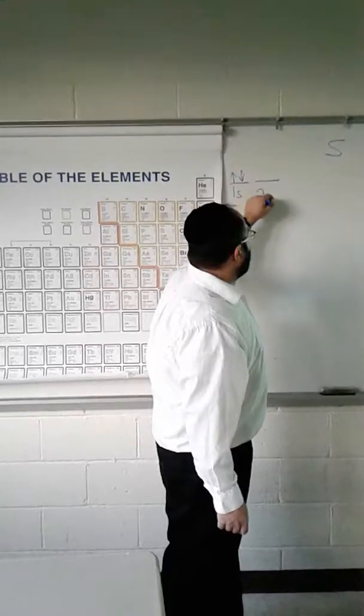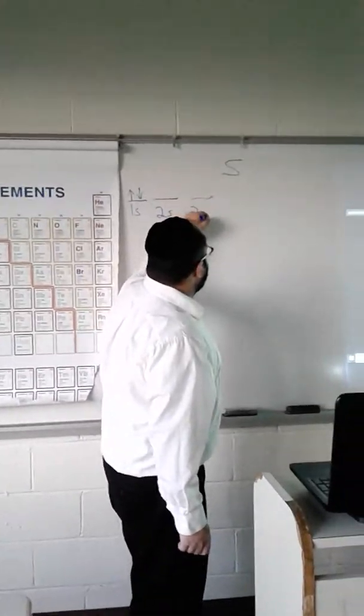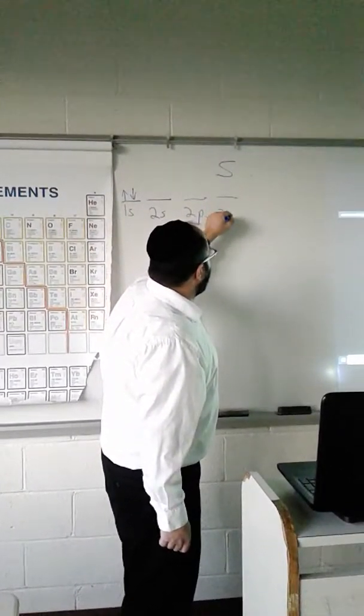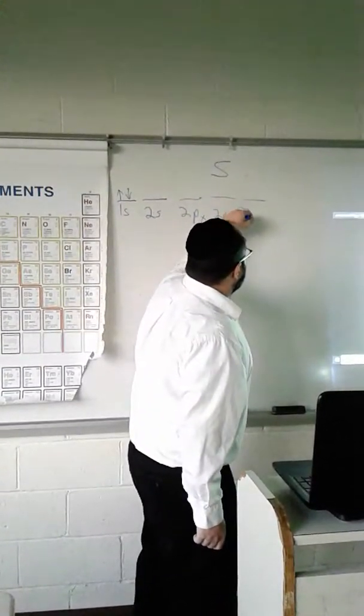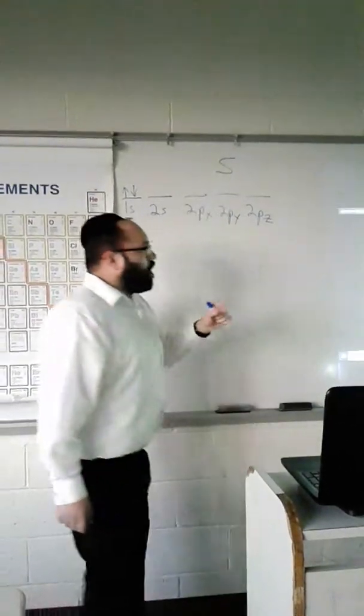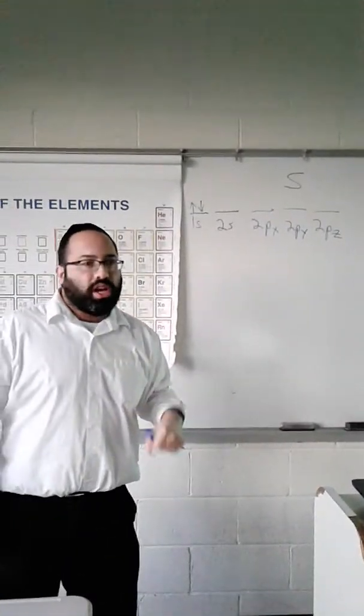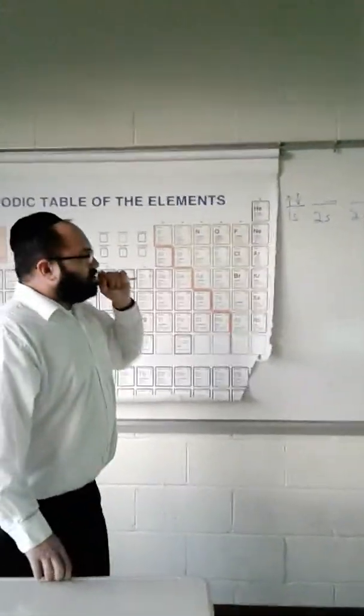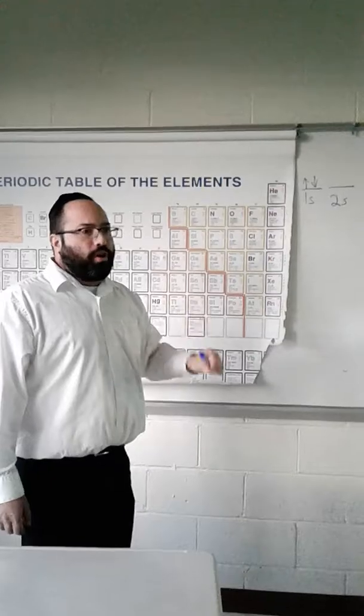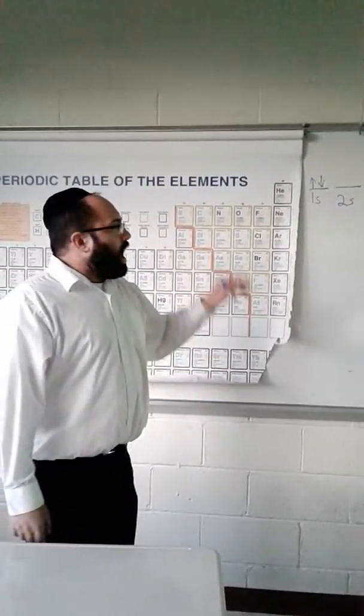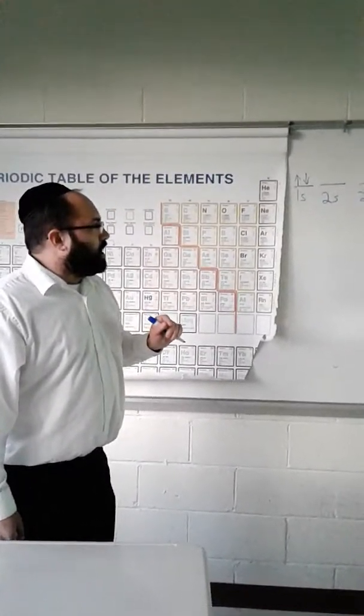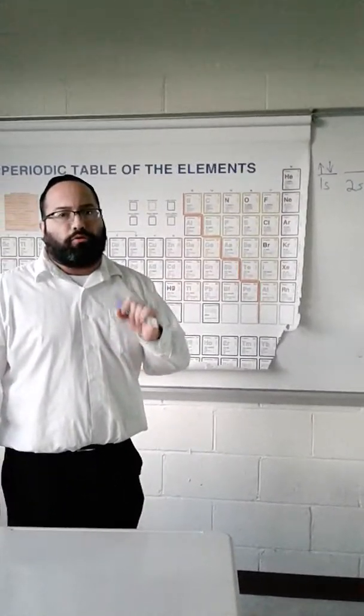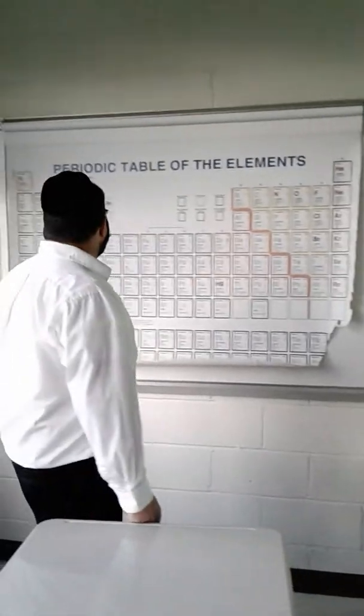Now, when I get to the second ring, I have s, p, and in p, I have px, py, and pz, right? Because the p's are divided up into three groups on the x, y, and z-axis. Now, when we fill the electrons, we fill the lowest energy first. s has less energy than p. All the p's have the same amount of energy, so I'm going to singly fill them before pairing them.